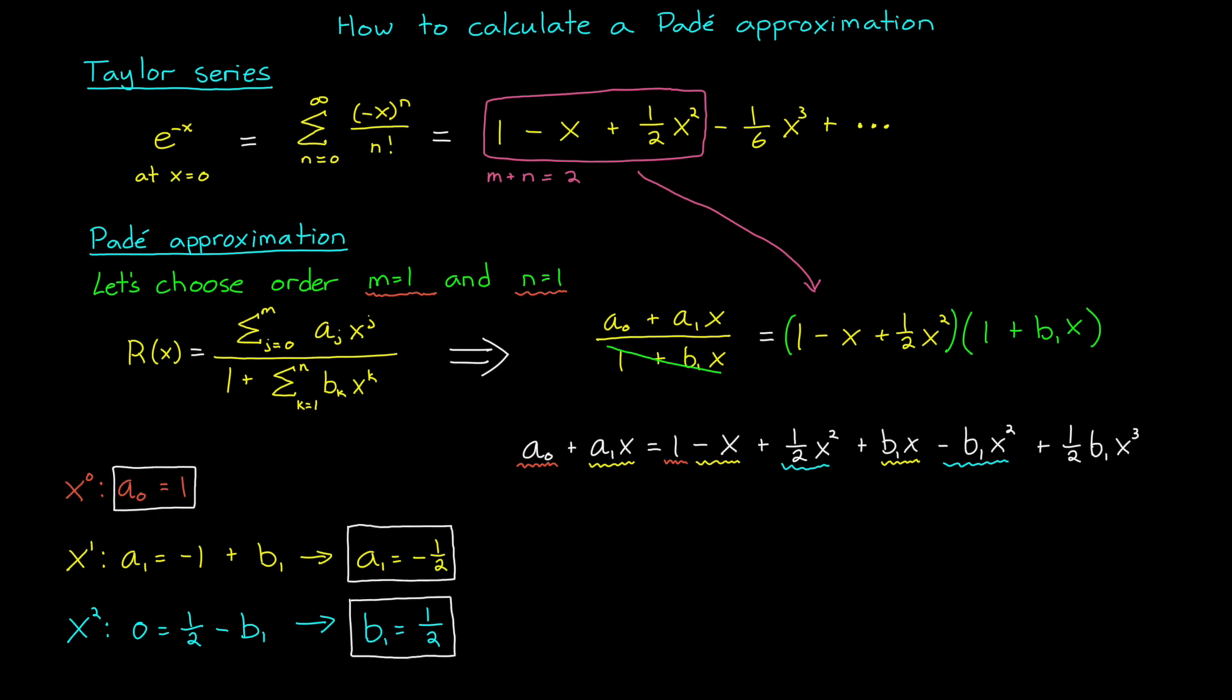At this point, we've solved for all of the coefficients. But we still have a leftover term in the equation. That's this x cubed term. So what do we do with this? Well, it just gets ignored. Remember, we only need to consider up to second order terms. And so the x cubed term is discarded during this process. And ignoring this term actually makes the Padé approximation different from the Taylor polynomial.